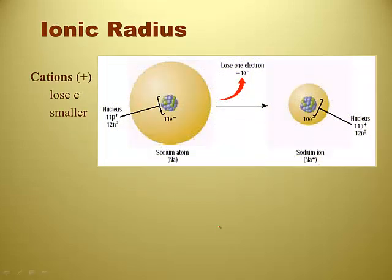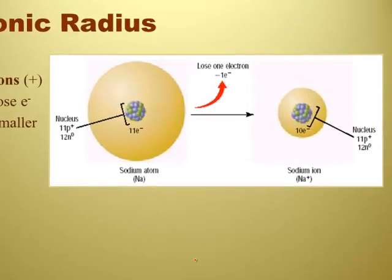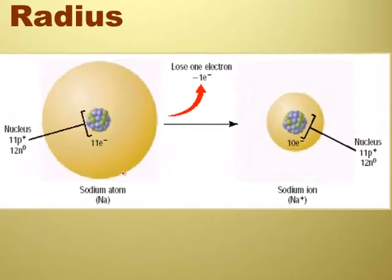The trend for cations is that they tend to lose electrons, so they become smaller. Here's an example with sodium: when we've got a sodium atom, it can lose one electron — we know that based on its location on the periodic table. When it loses that one electron, it gets smaller because it has one less energy level.